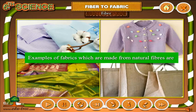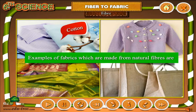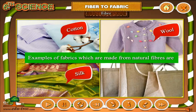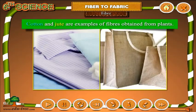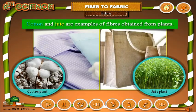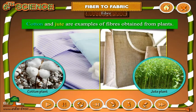The fibers that are obtained from either plants or animals are called natural fibers. Examples of fabrics made from natural fibers are cotton, wool, silk, and jute. Cotton and jute are examples of fibers obtained from plants.